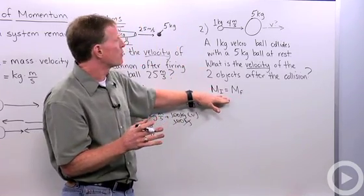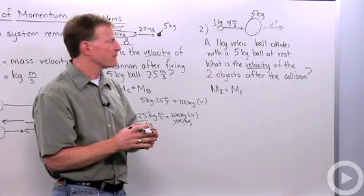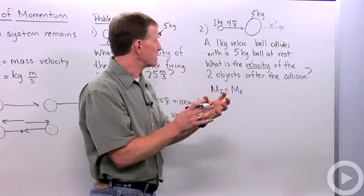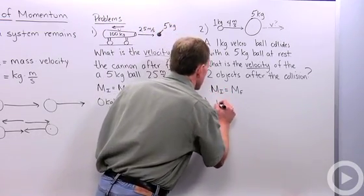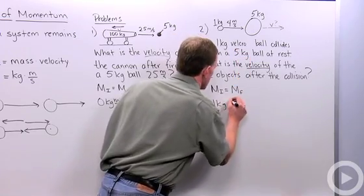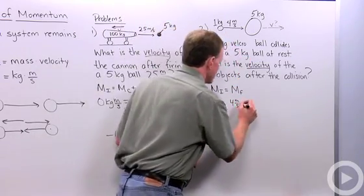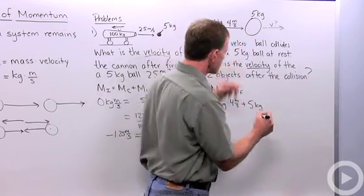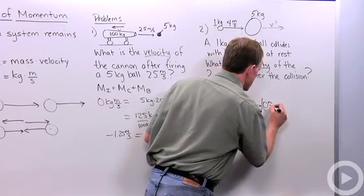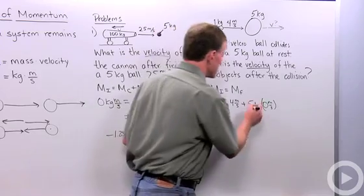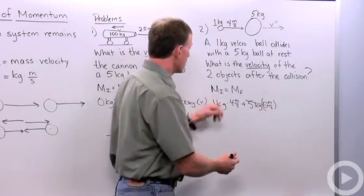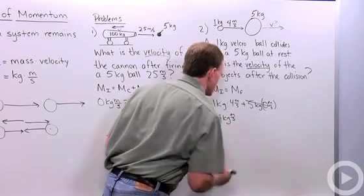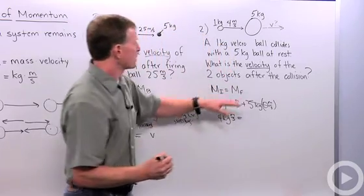My initial momentum is made up of two components: this ball and this ball, and the momentum of each. So let's calculate that. I've got 1 kilogram times 4 meters per second for that one, and I'm going to add that to 5 kilograms, and my velocity here is 0 meters per second. So this unit is 0, we can forget about it. So our initial momentum is just 4 kilograms meters per second. And that's going to equal our final velocity.